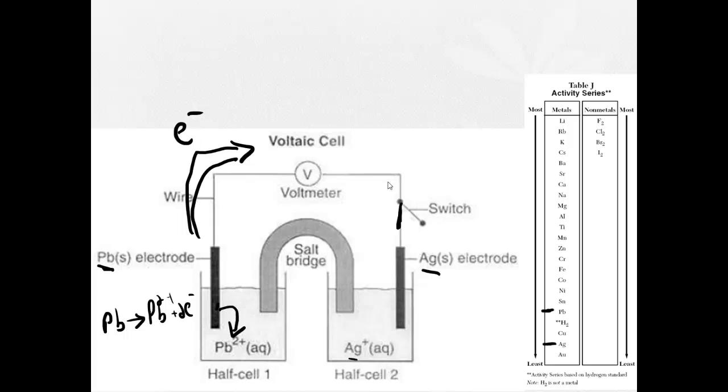Now, when these electrons come over here to the silver side, we get all these negative charges along here. These Ag+ in solution are attracted to them. And we have Ag+ plus these electrons becoming Ag0.